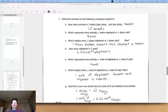So how many animals are in a dozen animals? 12. Which represents more animals? A dozen elephants or a dozen cats? Well they're both 12 right, so they're both the same. Which weighs more? A dozen elephants or a dozen cats? They weigh the same right? No, obviously not. A dozen elephants weighs more because each elephant is heavier.